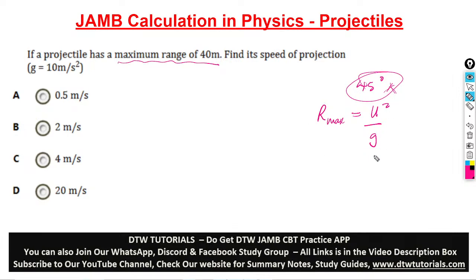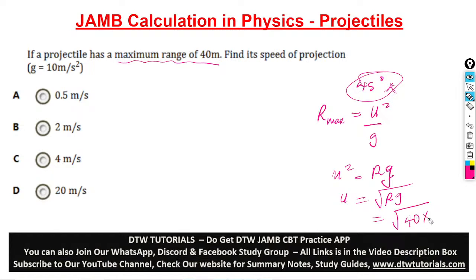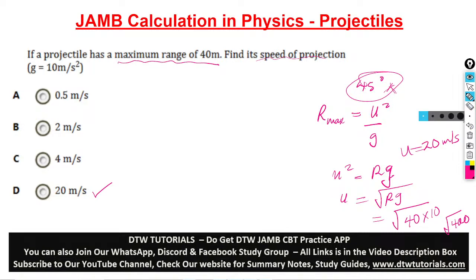Making u the subject of the formula: u squared equals R times g, so u equals the square root of R times g. That gives us the square root of 40 times 10, which is the square root of 400, which equals 20. So the speed of projection at a maximum range of 40 meters is 20 meters per second.